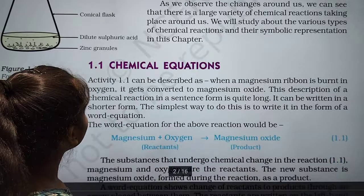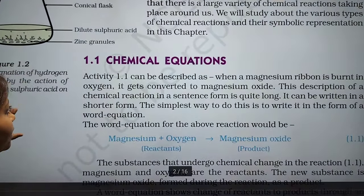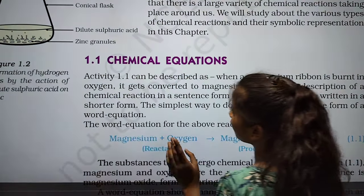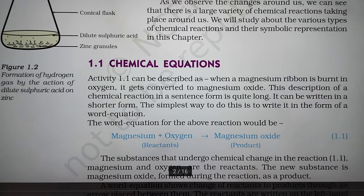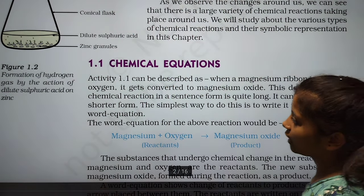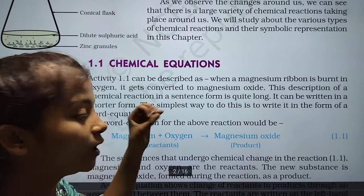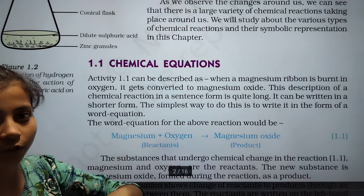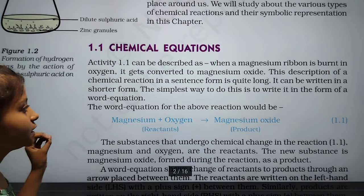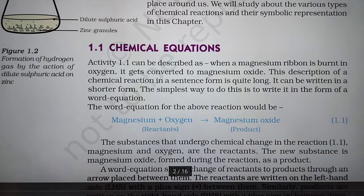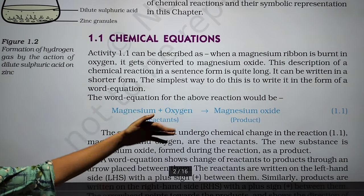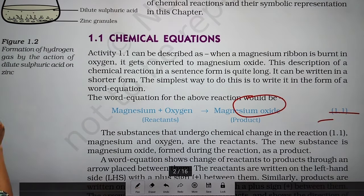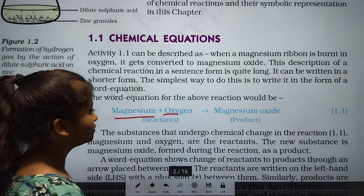From here our chapter starts — chemical equations. Activity 1.1 can be described as: when the magnesium ribbon is burnt in oxygen it gets converted into magnesium oxide. This description of a chemical reaction in sentence form is quite long. It can be written in a shorter form — a word equation. The word equation for this reaction would be: Magnesium + Oxygen → Magnesium oxide. These are the reactants.